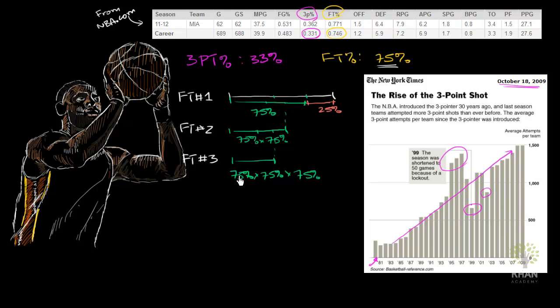And once again, we can write this as, we can either multiply it out or we can just write this as 75% to the third power, which is the same thing as 75%, literally means 75 per 100, same thing as 75 over 100 to the third power, which is the same thing as 0.75 to the third power.